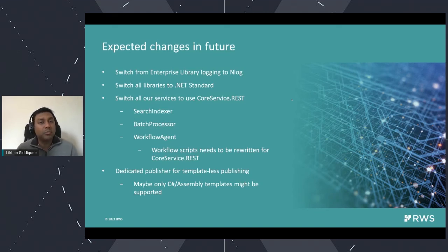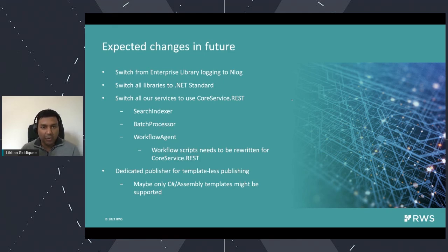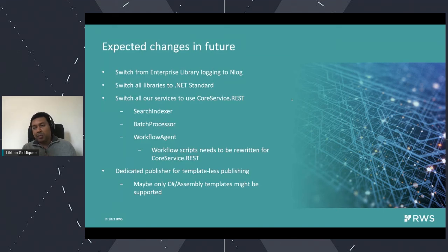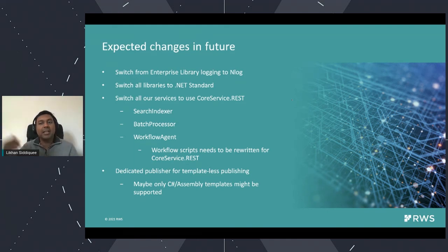What are the things still needed? One big thing is that a lot of you have been using Tridian for a long time and know how to configure logging based on Enterprise Library Logging. We are switching to NLog for that, and that's already going to be available in the next release — switching to NLog to ensure this is not a blocker. All libraries are going to be slowly moving to .NET Standard. It's always a rolling change and we cannot say exactly when all of these will be done, but it will continue moving forward.